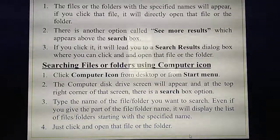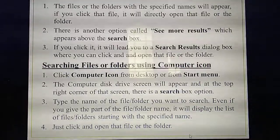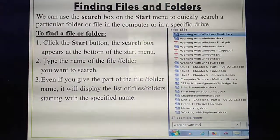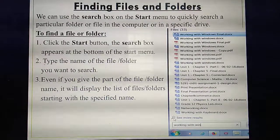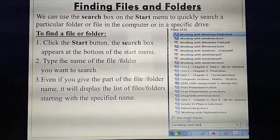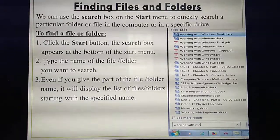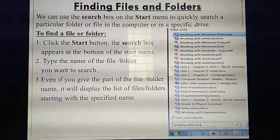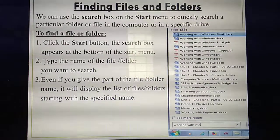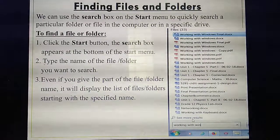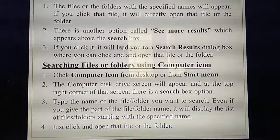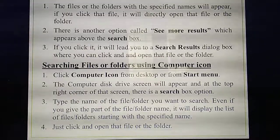The second method to find a file or folder is using 'See More Results.' In the Start Menu, above the search box there is a lens-like icon called 'See More Results.' If you click this, you can type your file or folder name and open the file directly. So two methods: first, Start button then search box; second, click 'See More Results' and type your file or folder name.